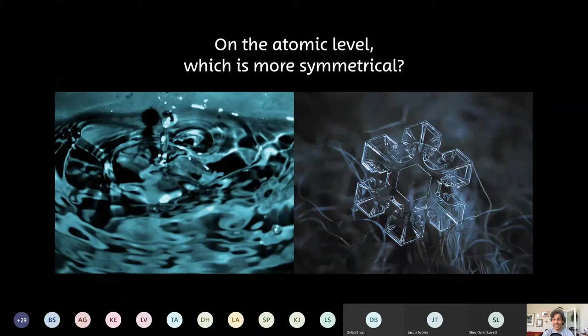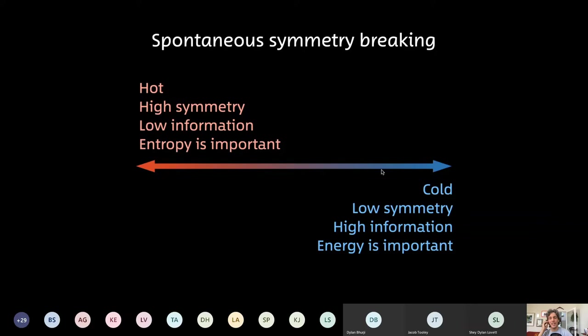The process of water freezing is an example of what's called spontaneous symmetry breaking — symmetry reduction. This is a very deep concept in physics. We have this tension: at high temperatures we tend to be in high symmetry phases like water. High symmetry is associated with low information, and what's important is entropy — this tendency towards disorder. As we cool things down, we tend to go to lower symmetry phases, which have the opportunity for higher information content, and energy becomes the most important driving factor.